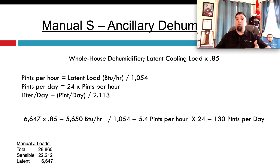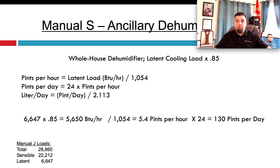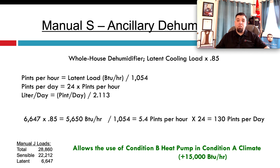We then multiply 5.4 pints per hour by 24 hours in a day, giving us 130 pints per day for this house. If you need liters per day instead, divide the pints per day value by the constant 2.113 to convert.